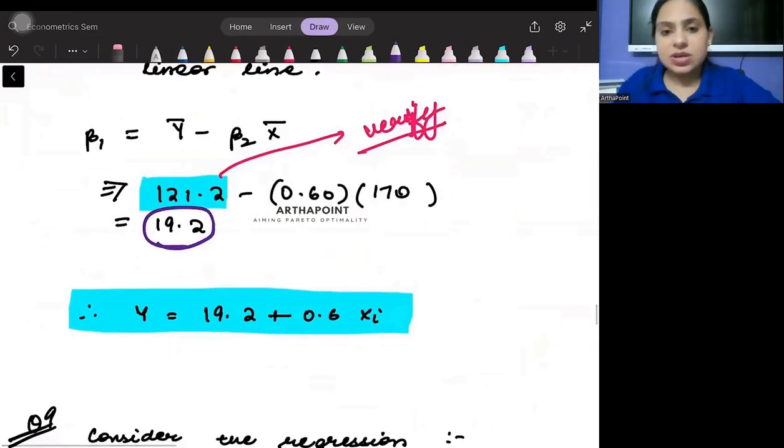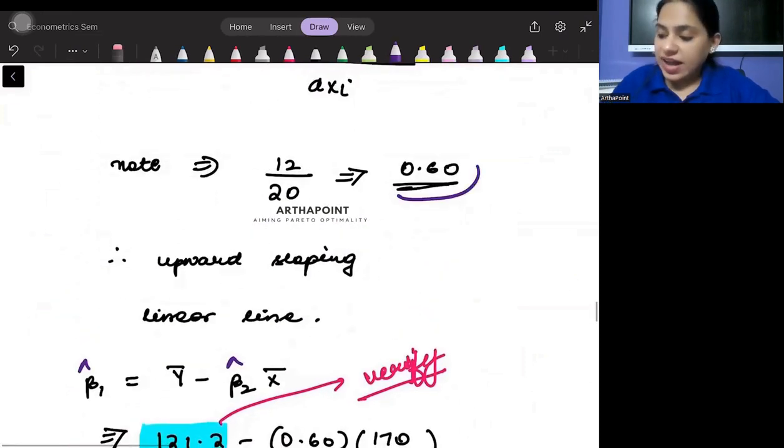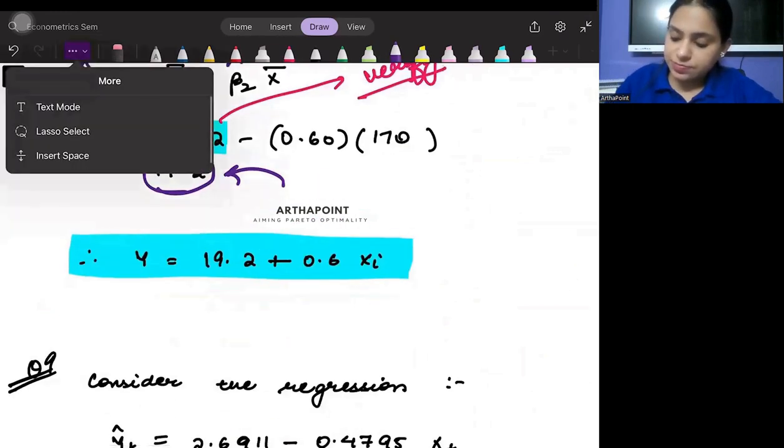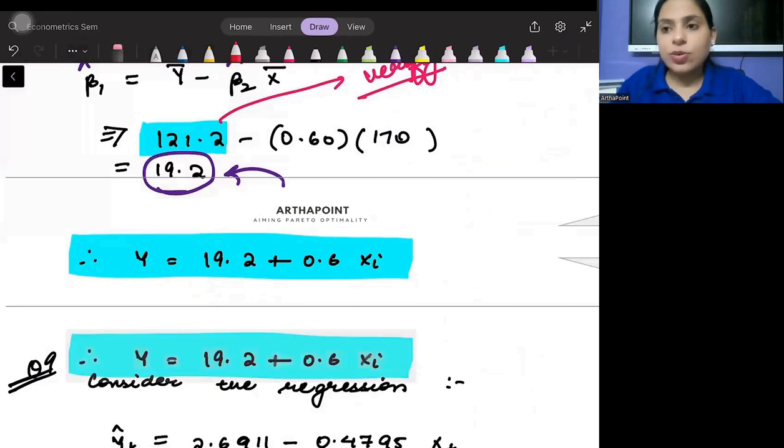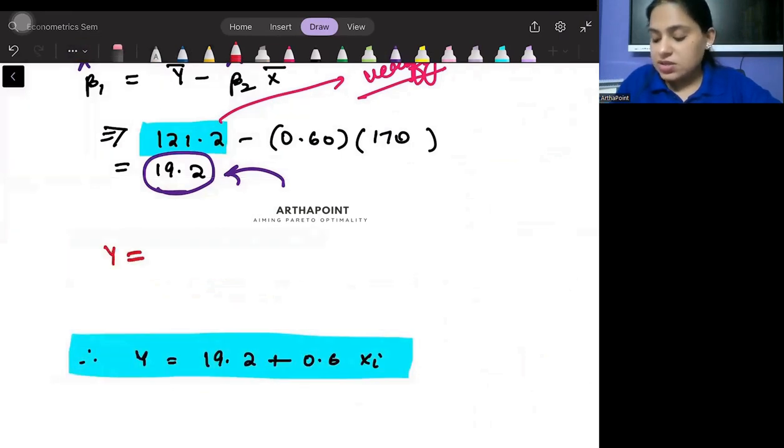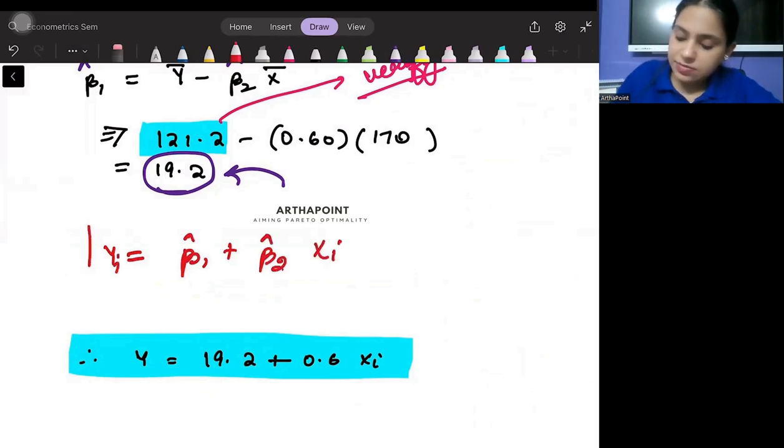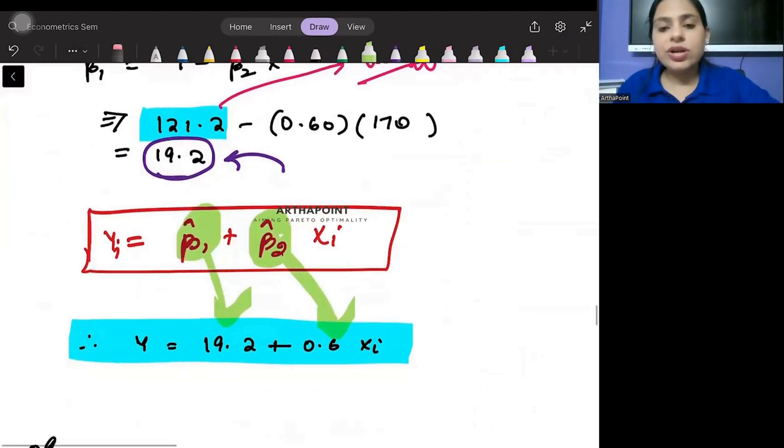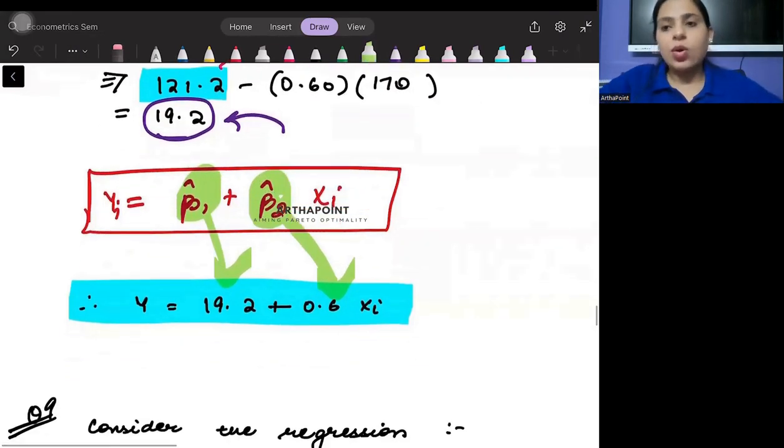When you put it in this formula, you will get beta 1 hat as y bar minus beta 2 hat x bar. Therefore, you have beta 1 hat as 19.2 and beta 2 hat as 0.60. You will put it in the equation: y equals beta 1 hat plus beta 2 hat x i. Beta 1 hat will be this, beta 2 hat will be this. Put it and get the answer.